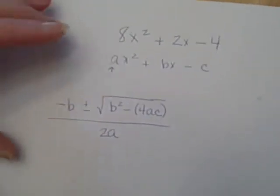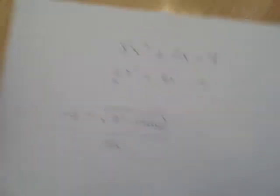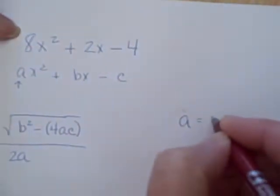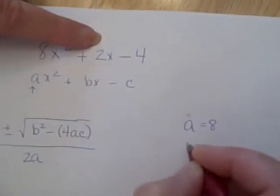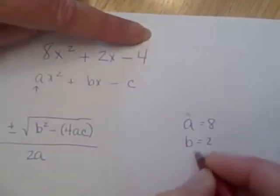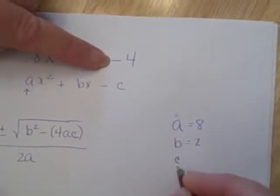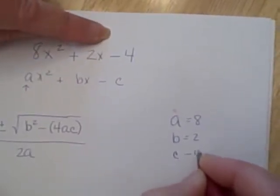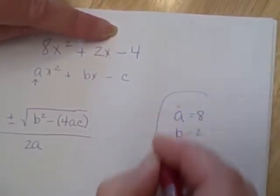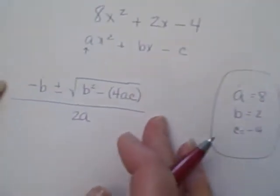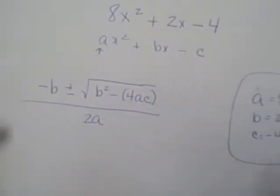So you've got this really complex equation here, which isn't complex at all, because your value for a every time is going to be 8. Your value for b every time is going to be 2. Your value for c, remember this is a minus, so it's negative 4. So there's your three values. So you take this generic equation and just plug in those numbers.